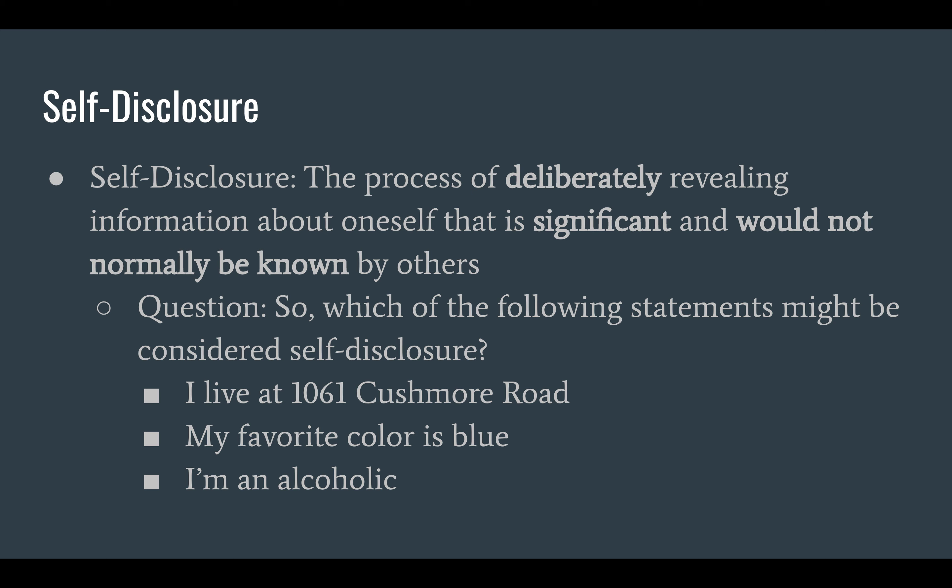So let me ask you a question. Which of the following statements might be considered self-disclosure? I live at 1061 Cushmore Road, my favorite color is blue, or I'm an alcoholic? Well, out of those three choices, the best answer would be I'm an alcoholic. I'm telling you on purpose, deliberately. I'm sharing important, significant information about myself that you wouldn't normally know.